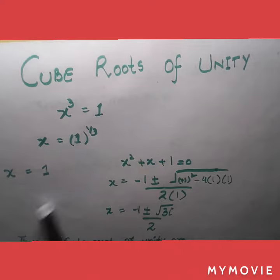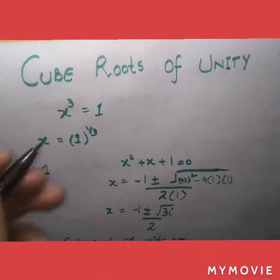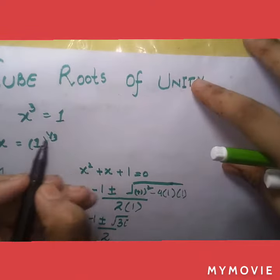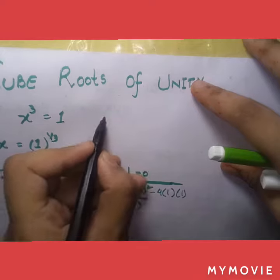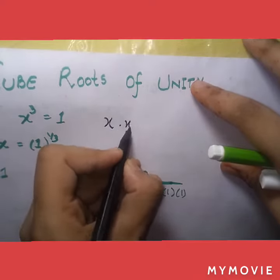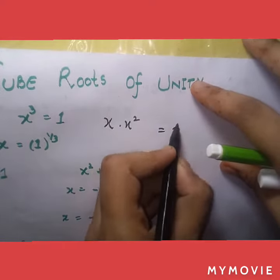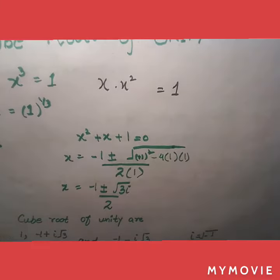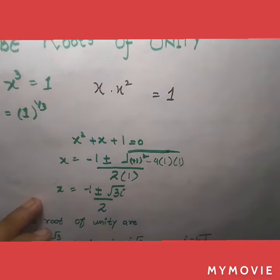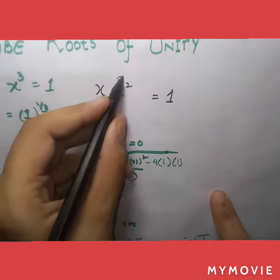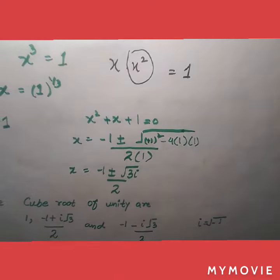x equals 1 or x square plus x plus 1 equals 0. How? You can say that x into x square equals 1. x may be equal to 1 and the other equation is set to be equal to 0.